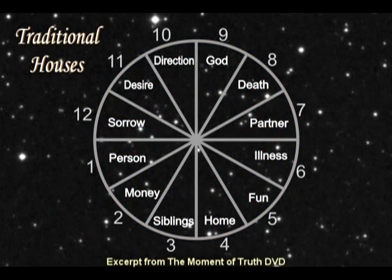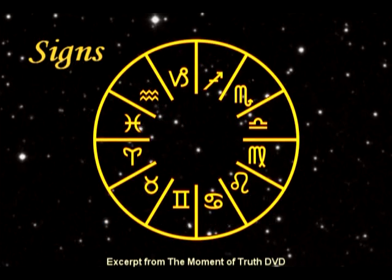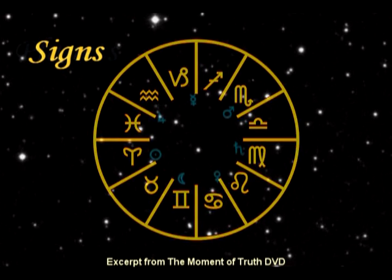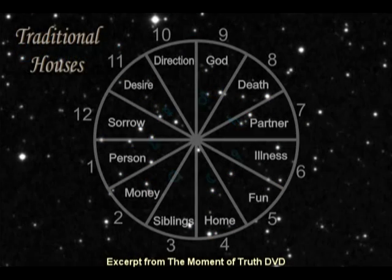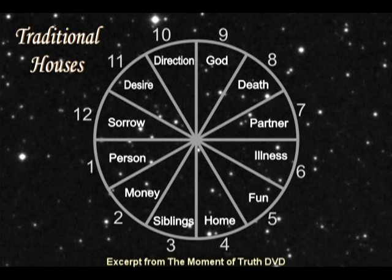They are the houses, numbered 1 through 12. They are the signs, numbered 1 through 12. And then the planets, of which there are seven.